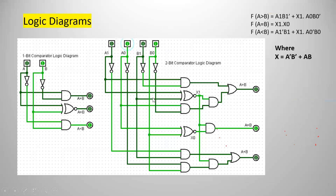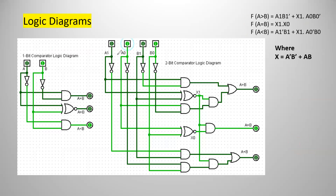Based on these boolean expressions, we develop the logic diagrams. This is the 1-bit comparator logic circuit — already explained in the last video. In this video, I will explain how to draw the logic diagram for the 2-bit comparator. The inputs are a1, a0, b1, b0.